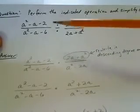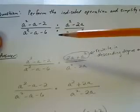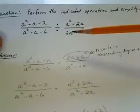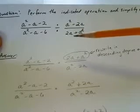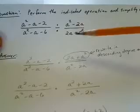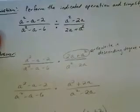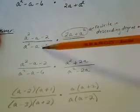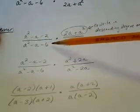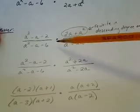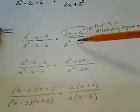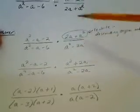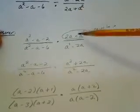First we can rewrite this. When we see a division sign we can change to multiplication and take the reciprocal of the very next term. The reciprocal just means to flip the numerator with the denominator and the denominator with the numerator. So we change to multiplication, then take the reciprocal: a squared minus 2a goes to the denominator and 2a plus a squared goes to the numerator.